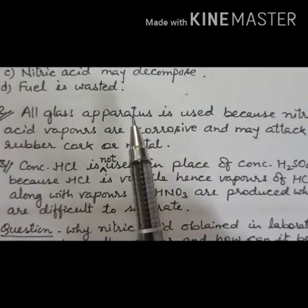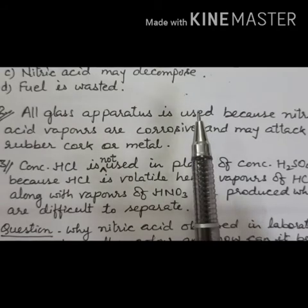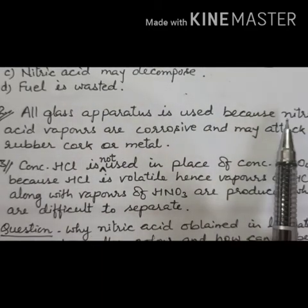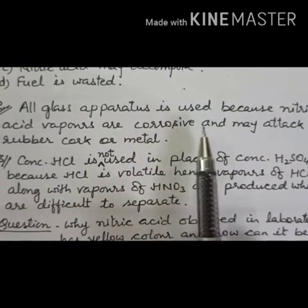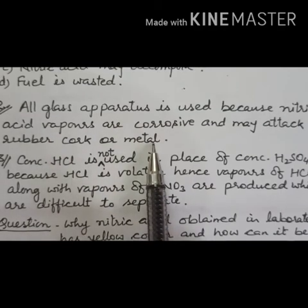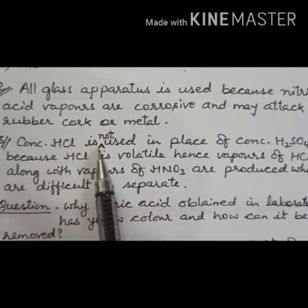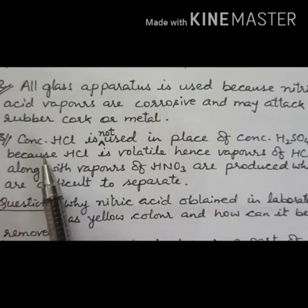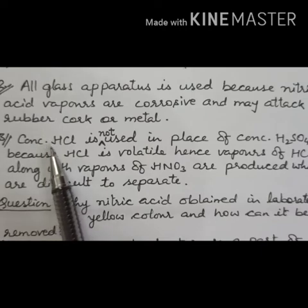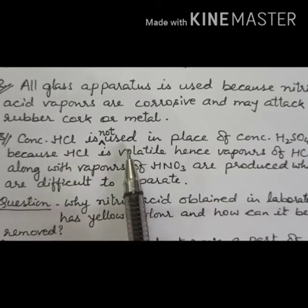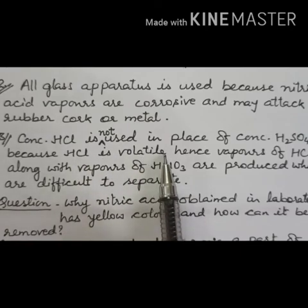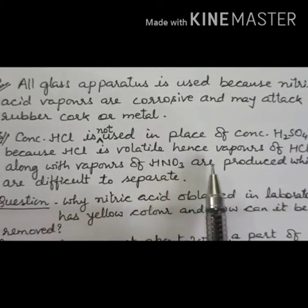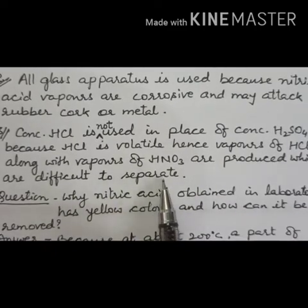Second precaution: all glass apparatus is used in the laboratory preparation. This is because nitric acid vapors are highly corrosive and may attack rubber, cork, or metal. Third precaution: concentrated sulfuric acid is used, but concentrated hydrochloric acid cannot be used in its place, because hydrochloric acid is volatile and its vapors mix with nitric acid vapors, making them difficult to separate.